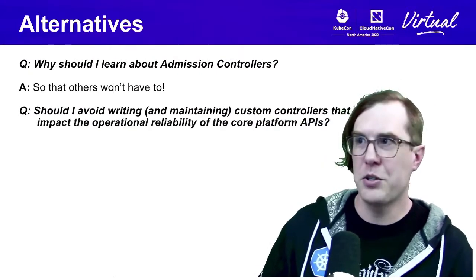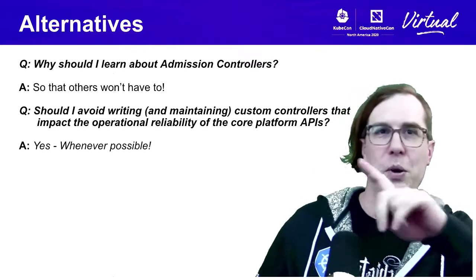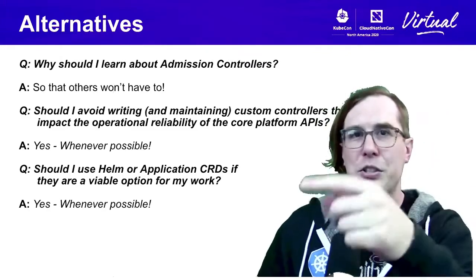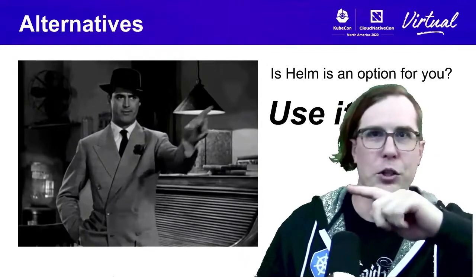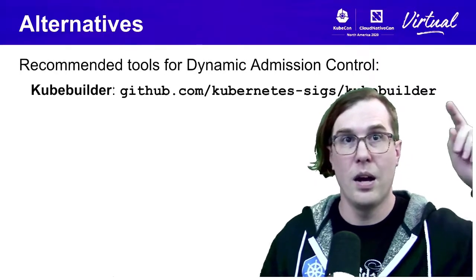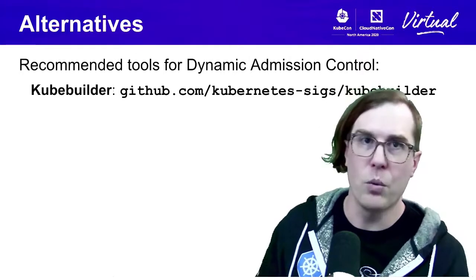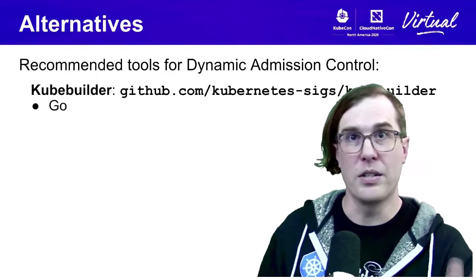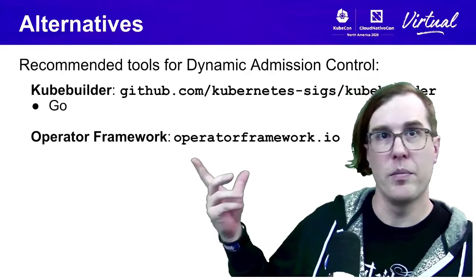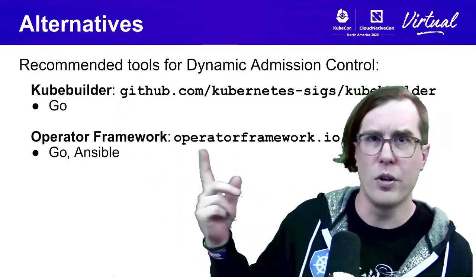Should you avoid writing and maintaining custom controllers that may impact the operational reliability of core platform APIs? Yes — whenever possible, avoid this. Use Helm or application CRDs instead if you can. If you are doing dynamic admission control or application CRDs, take a look at KubeBuilder for Go development, or the Operator Framework, which actually uses KubeBuilder as of its 1.0 release. Ansible is another option — you can import Ansible roles and run them using an operator. Both KubeBuilder and Operator Framework include support for using OpenAPI spec for schema-based validation of inputs.